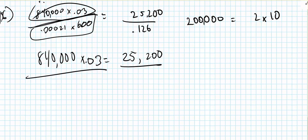Put that over what you get when you multiply 0.00021 times 600, which is 0.126. Now when you divide 25,200 by 0.126, you get 200,000.